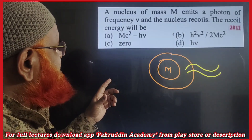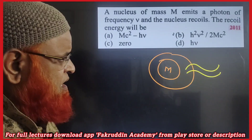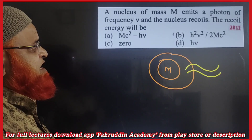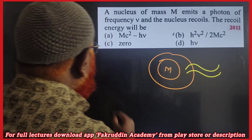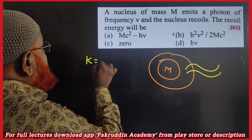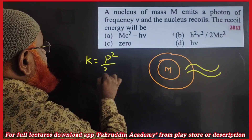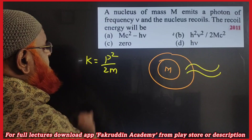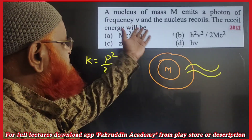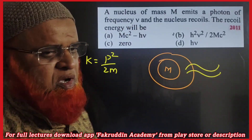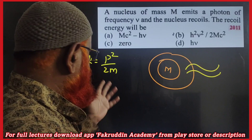We are asked to find out the recoil energy. Kinetic energy is written as P² / 2m, and that is the energy we need to find out.